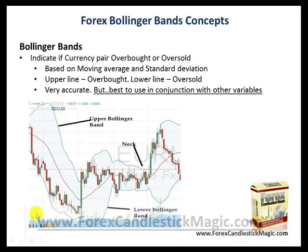These two lines basically indicate if it is an overbought situation or an oversold situation. So when the currency pair, for example, is touching this particular upper level, it is considered to be in the overbought condition. And when the currency pair is touching the lower level, it is considered to be in an oversold situation. So these are the parameters which are used by traders to decide whether they should open or close a particular trade, buy a currency pair or sell a currency pair.